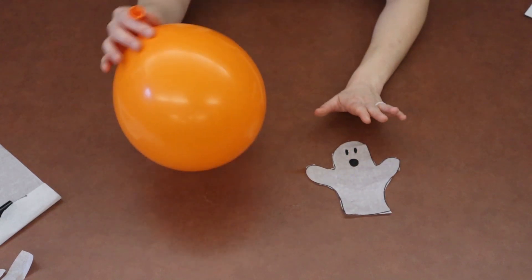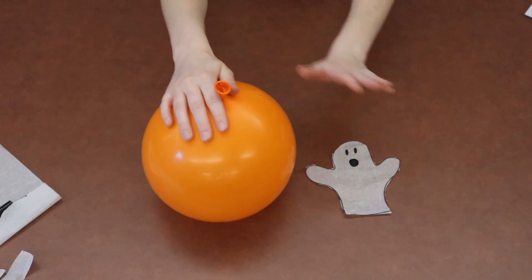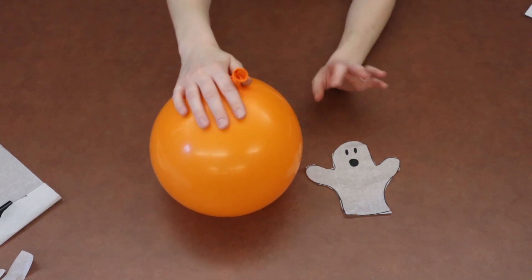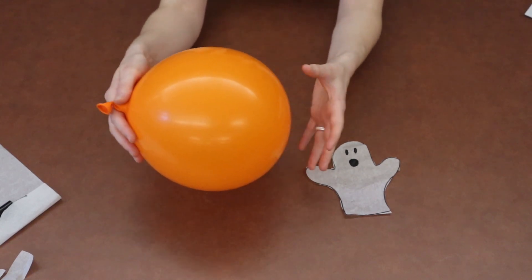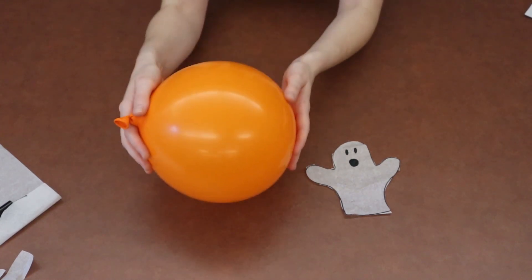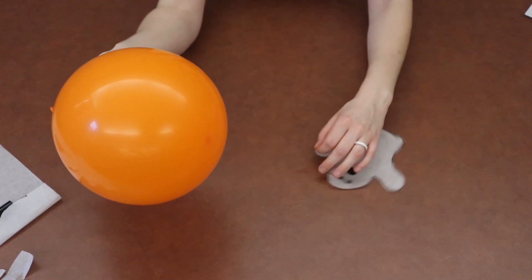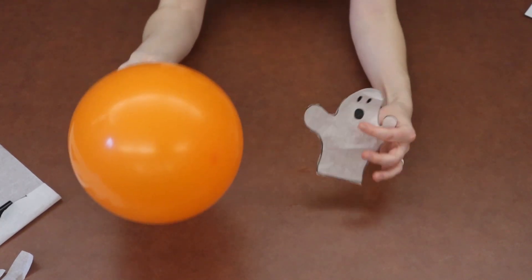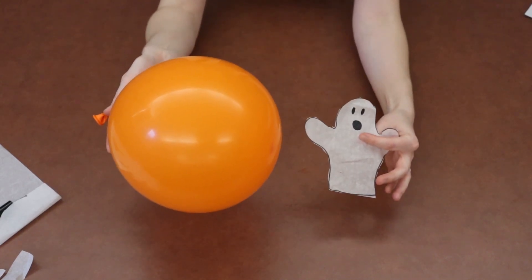So again, when we rub our balloon, either on our hair or the carpet or even a piece of furniture that's cloth, it's going to steal those electrons and build them up on our balloon. And then we have something called static electricity that is going to attract our charged up balloon to our ghost and make him dance. So should we give it a try?